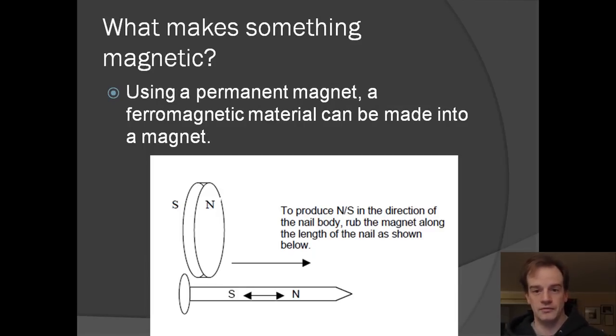And we can make something, a magnet, that's ferromagnetic, by using a permanent magnet. And if we can get all those domains in the object to go the same direction, we can give it some magnetism. We can do this by running a magnet along a nail or a paper clip.